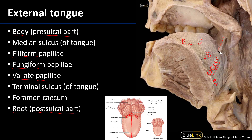The body of the tongue is innervated by the lingual nerve, which serves as the general afferent. Fibers from the chorda tympani — that's the facial nerve — hitchhike along the lingual nerve for special sensory function, providing taste from the anterior tongue. This covers most of the body of the tongue, with the exception of the valate papillae.